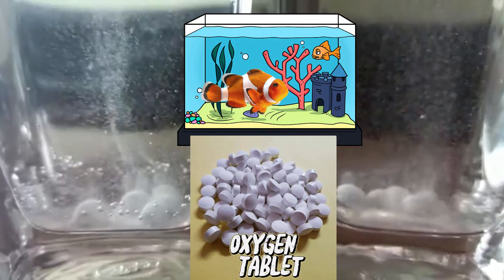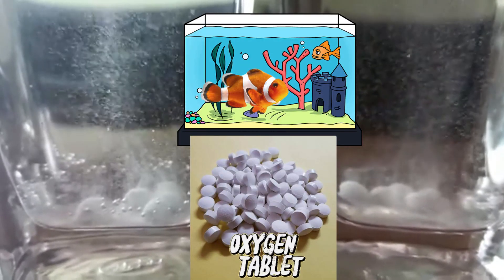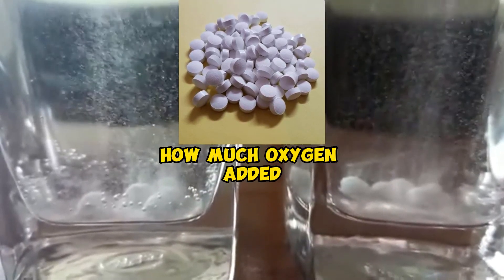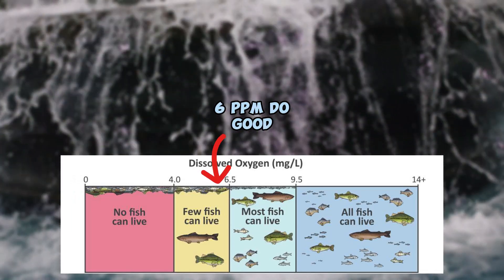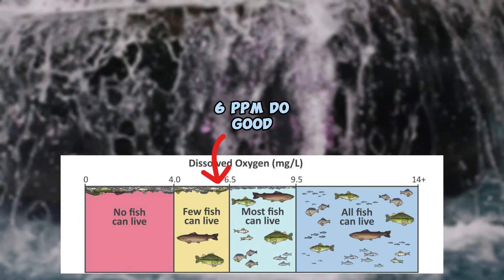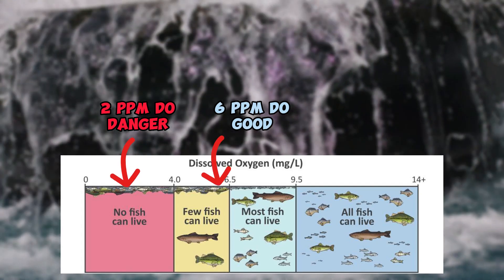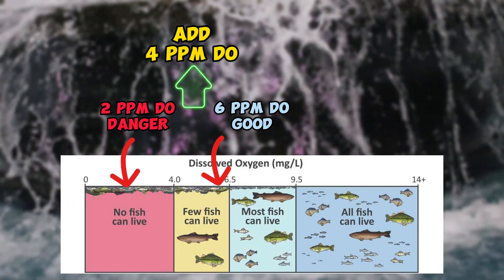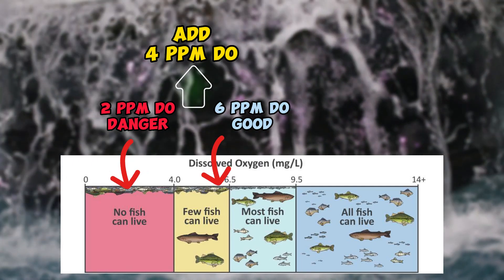Oxygen tablets provide a quick solution to increase the desired oxygen levels of water. But how much oxygen can these tablets actually add? The good oxygen level in water is 6 ppm, or 6 mg of oxygen per litre of water. If this level drops to 2 mg per litre, we need to add 4 mg per litre to reach the desired oxygen level — that is 4 ppm or 4 mg per litre.